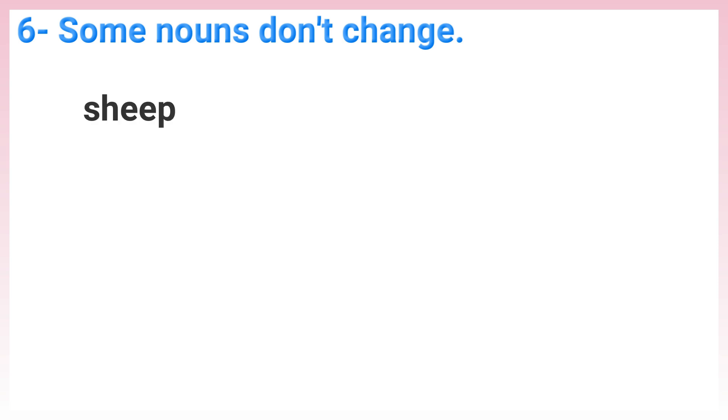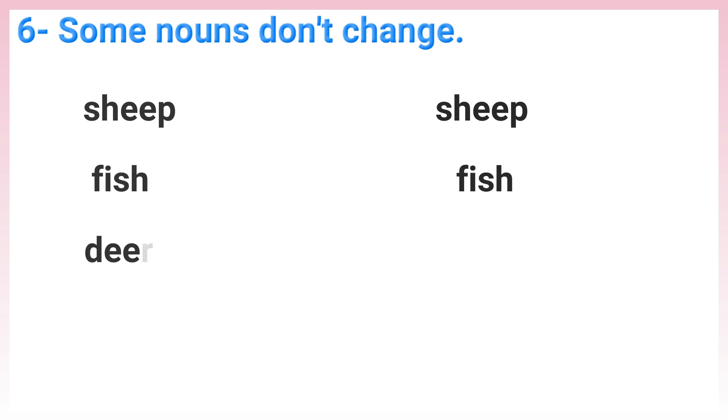Rule 6: Some nouns don't change. Such as: sheep → sheep, fish → fish, deer → deer.